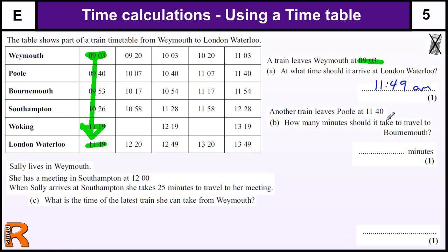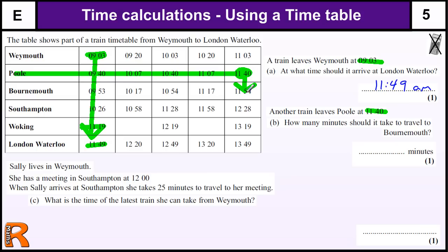Another train leaves Poole at 11:40. Looking at Poole, we go across until we get to 11:40, which is this one. How many minutes does it take to travel to Bournemouth, the next stop? 10 minutes would be 11:50, plus 4, so 14 minutes.